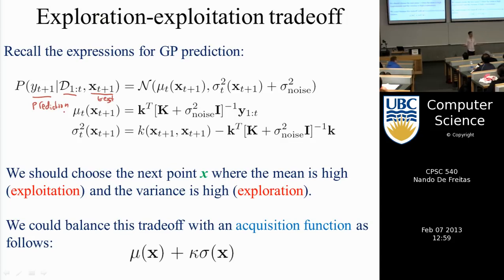With a fast CPU we can try all the optimization algorithms out there — this is a much easier problem. A student asks: if you have the wrong trade-off, could the learning get stuck at a local maximum? Yes indeed. For this particular acquisition function it's not clear we can prove convergence. I'll next talk about a few acquisition functions for which we can discuss convergence.